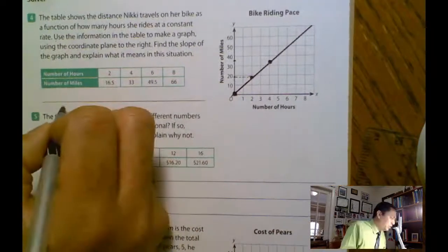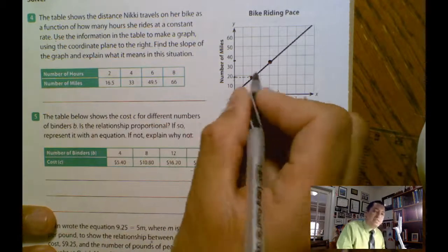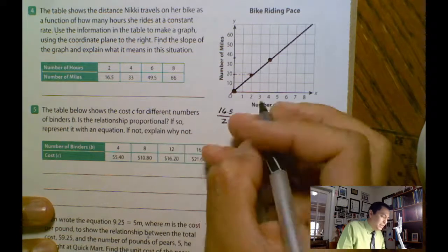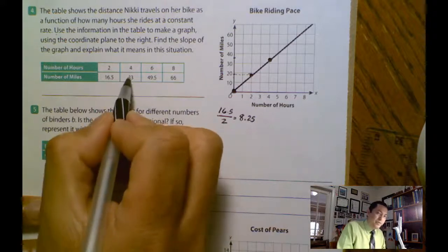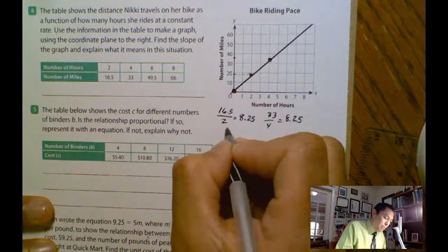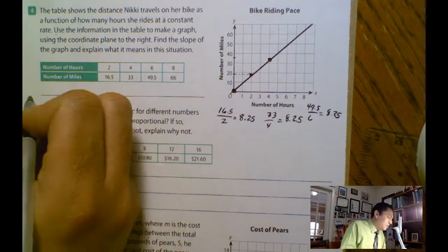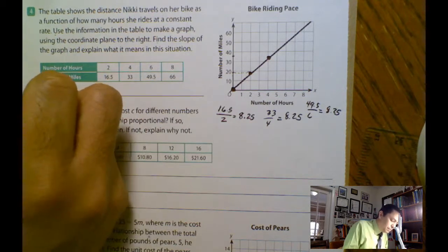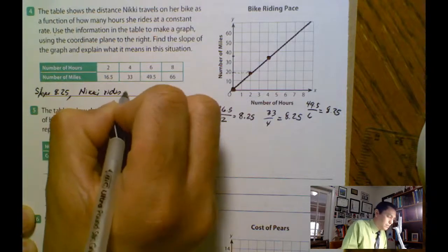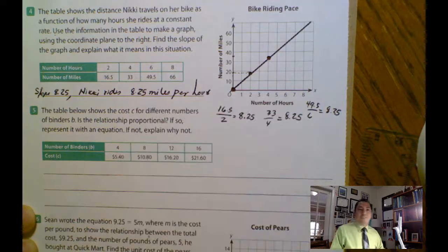And now I'm ready to answer the question. It says, make the graph, graph the points, find the slope. Remember that the slope, this one is a graph, it's an approximation. So I'm going to use the points. So I'm going to say, 16.5 divided by 2 equals 8.25. I'm going to take another point, 33 divided by 4 equals 8.25. That's my slope. See, this is the constant rate of change. If I do one more, 49.5 divided by 6 equals 8.25. So it's a constant rate of change. So my answer here is, what is the slope? Slope, 8.25. And then I'm going to say Nikki rides 8.25 miles per hour. That's the answer.